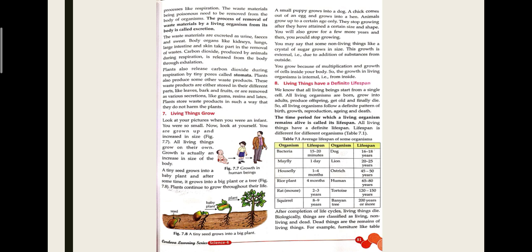A tiny seed grows into a baby plant and then into a big tree. In plants, you can see growth throughout their entire lifespan — there is no age limit. But in animals and human beings, there is a certain age limit. From a small puppy to a dog, or from a chick in an egg to a hen — animals grow only up to a certain age and stop growing after attaining a certain size and shape.